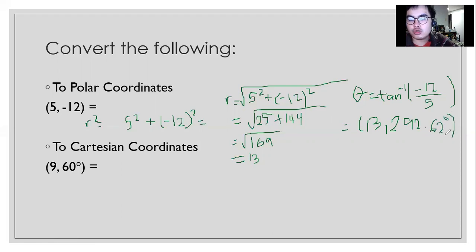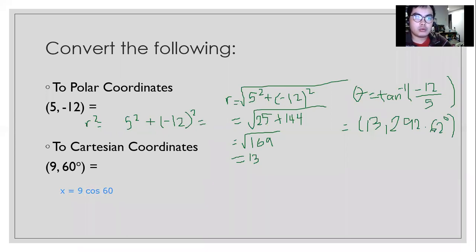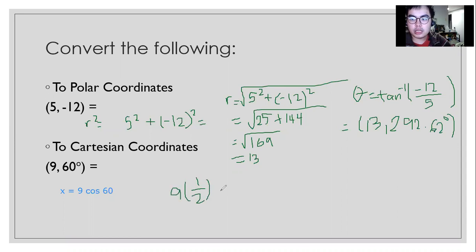Now we're going to convert from polar to Cartesian. First, we're going to multiply 9 by the cosine of 60 degrees. What is cosine of 60 degrees? It is 1/2. So we multiply 1/2 by 9, and therefore X equals 9 over 2.